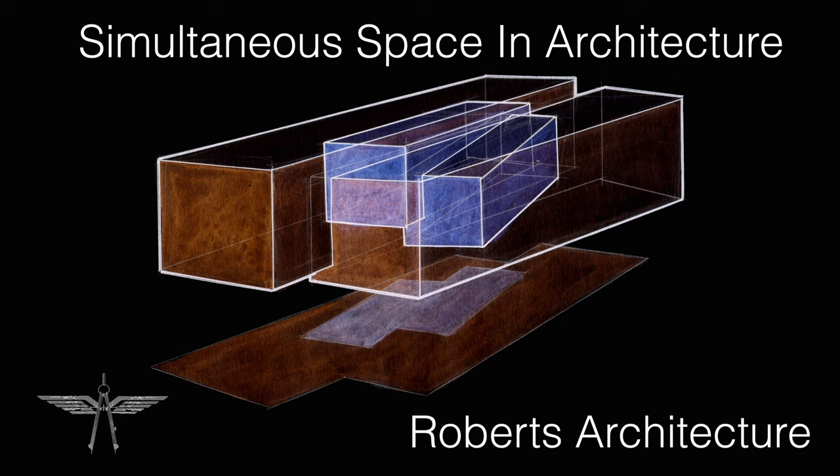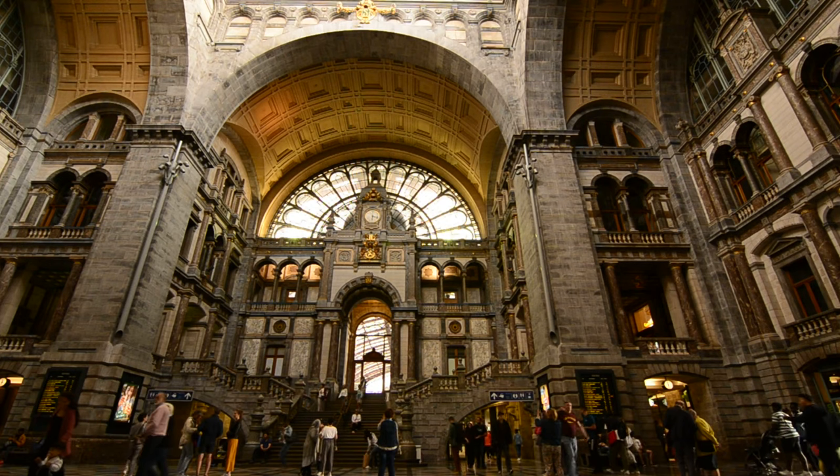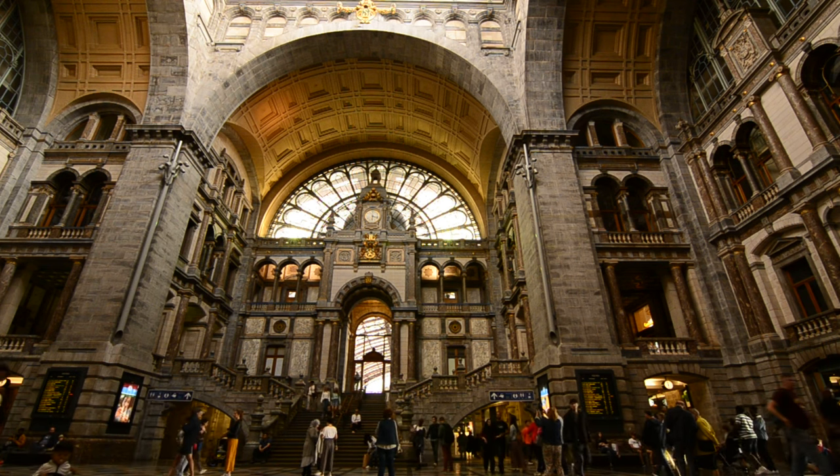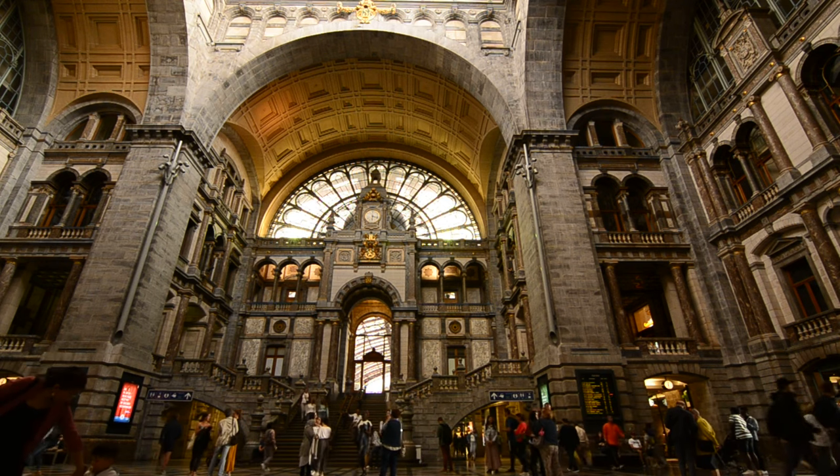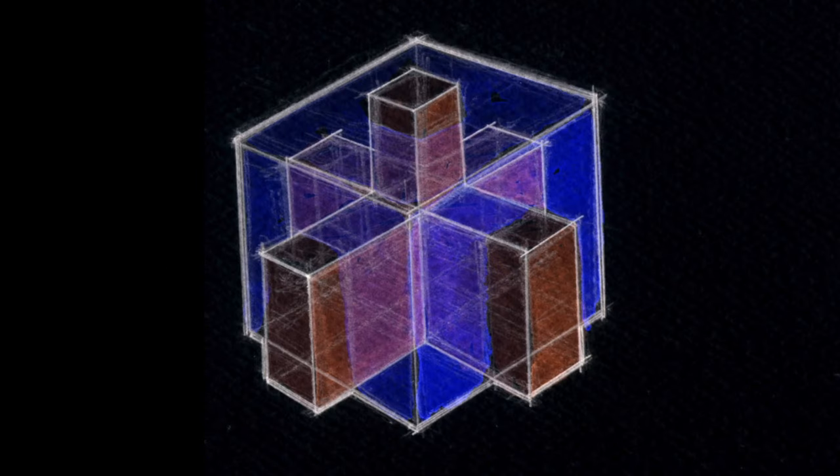Simultaneous Space in Architecture by Roberts Architecture. Simultaneous spaces are used extensively in architecture. Simultaneous spaces are perceived both individually but also together as a group or structure of spaces. This perception is simultaneous, occurring at the same time.